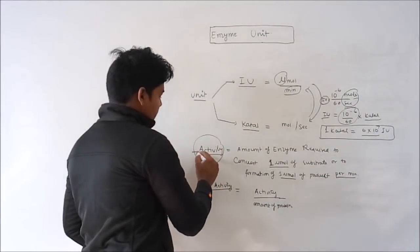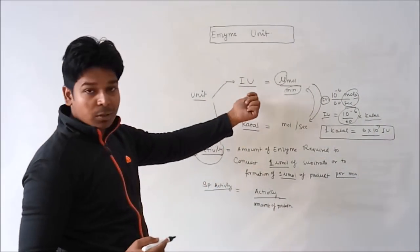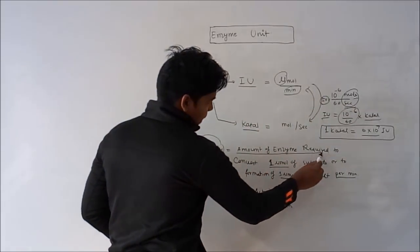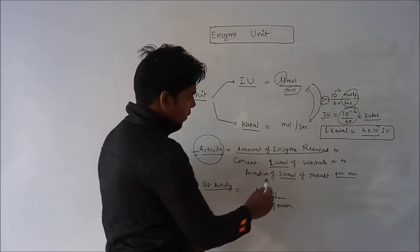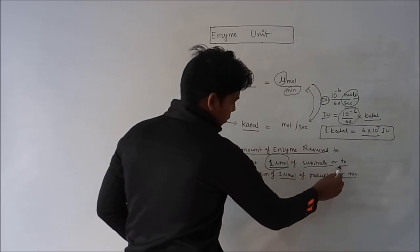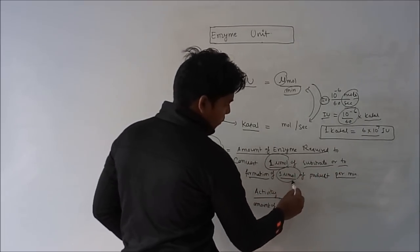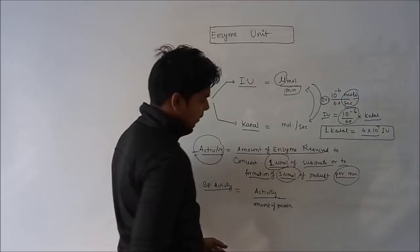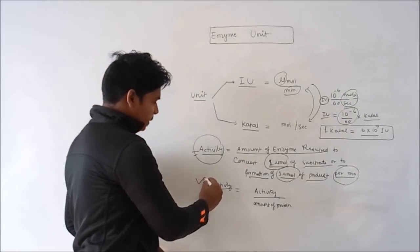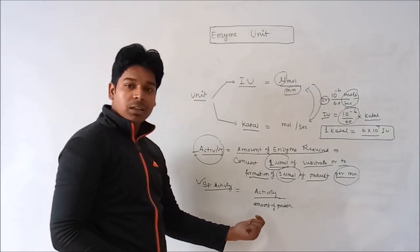What is the activity of enzyme? Activity of enzyme is related to the international unit, that is amount of enzyme required to convert one micromole of substrate or to formation of one micromole of product per minute. And the specific activity of enzyme is activity divided by the total amount of protein.